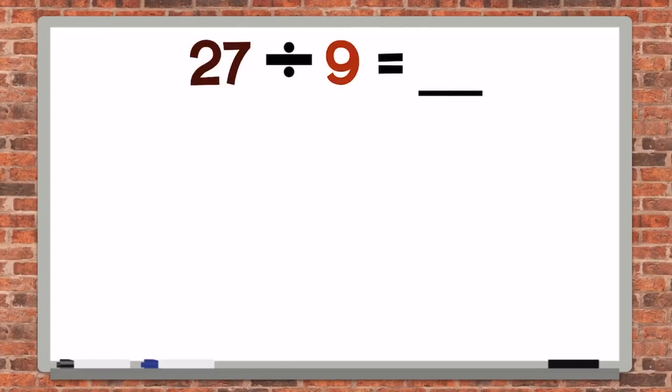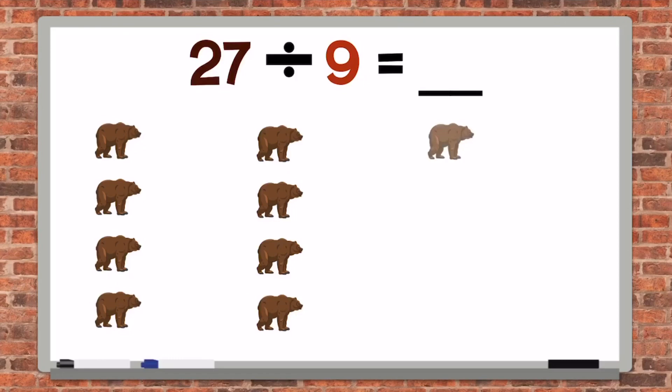27 divided by 9. We can think of this problem as 27 salmon divided by 9 grizzly bears. Let's draw the 9 grizzly bears. Here we have 9 grizzly bears. We have 27 salmon to share or divide with these 9 grizzly bears. Let's start counting until we get to 27.